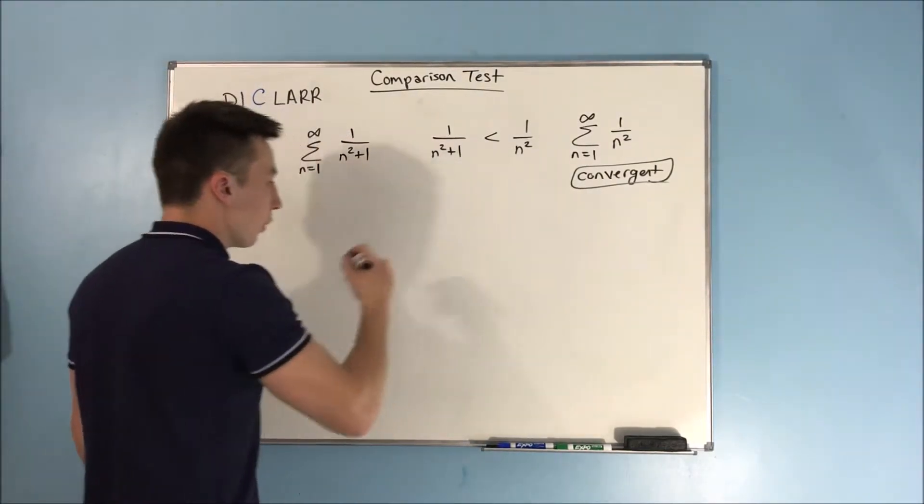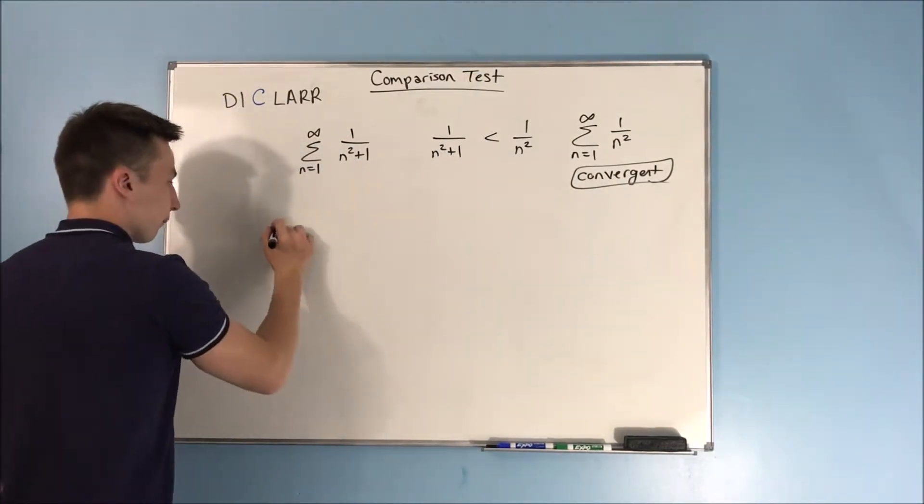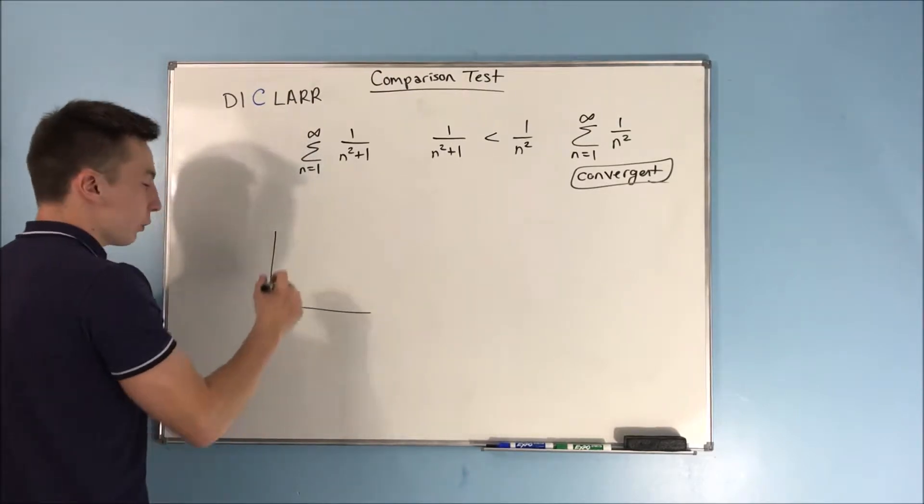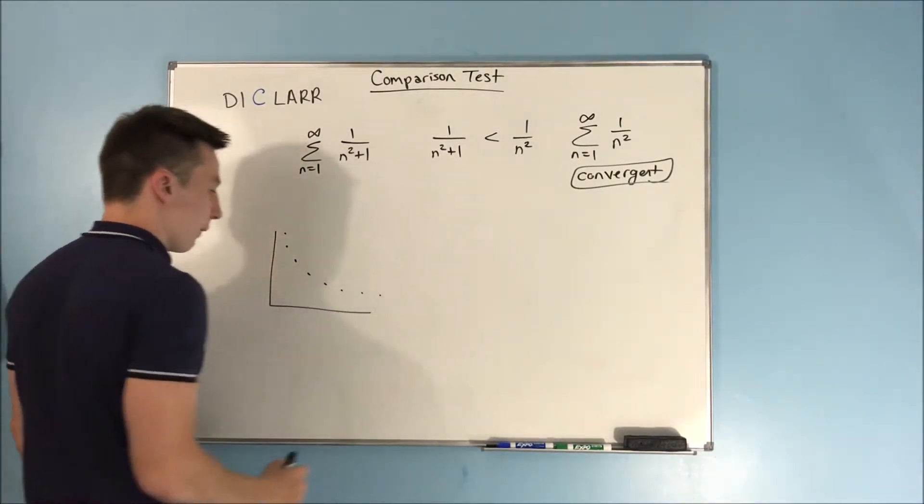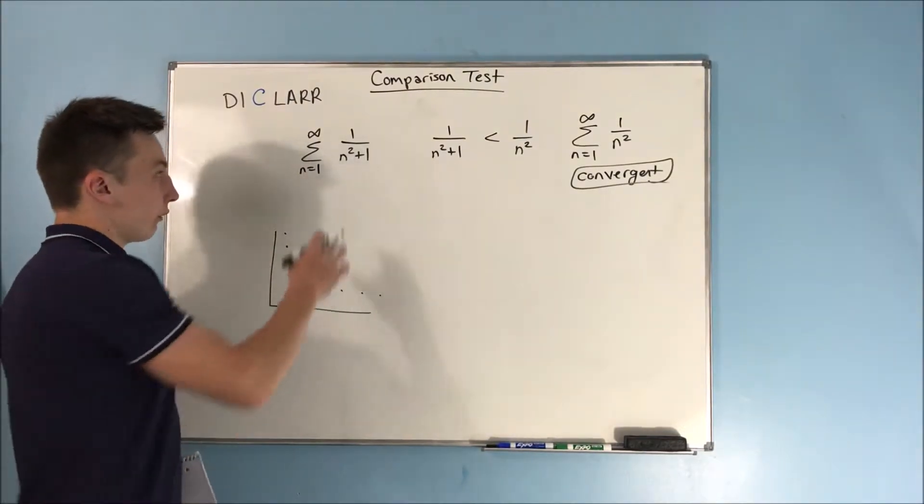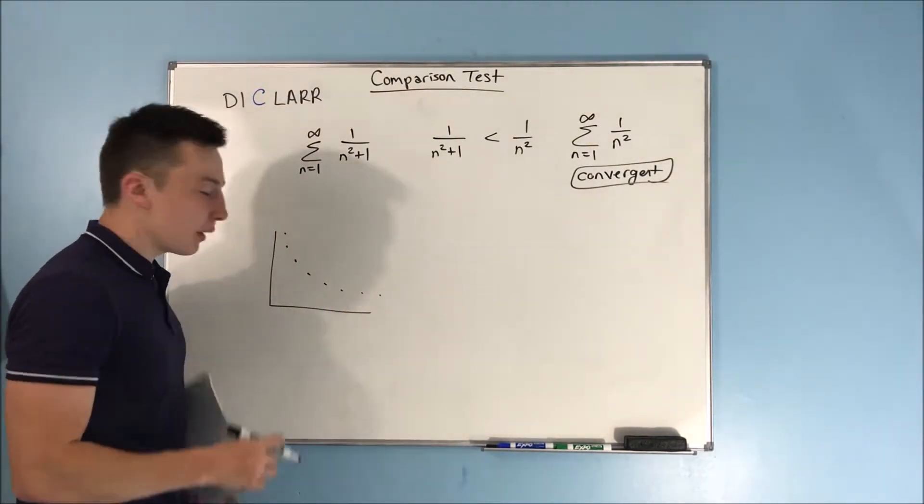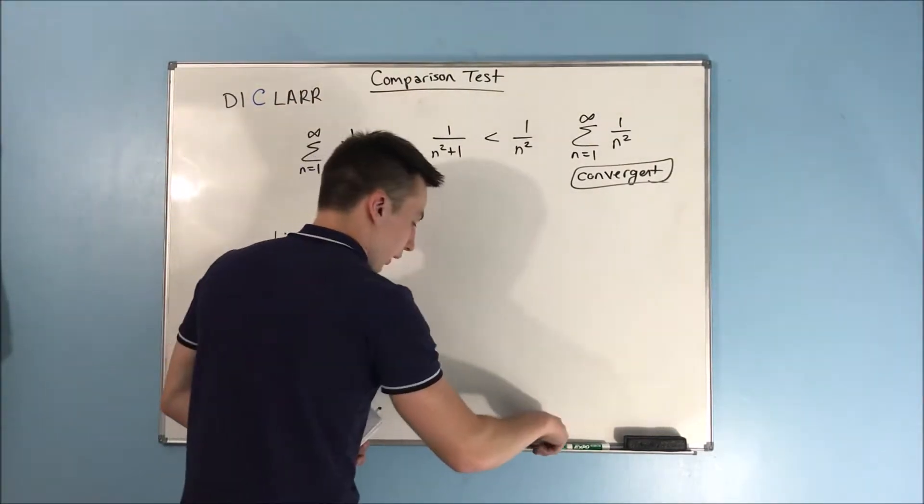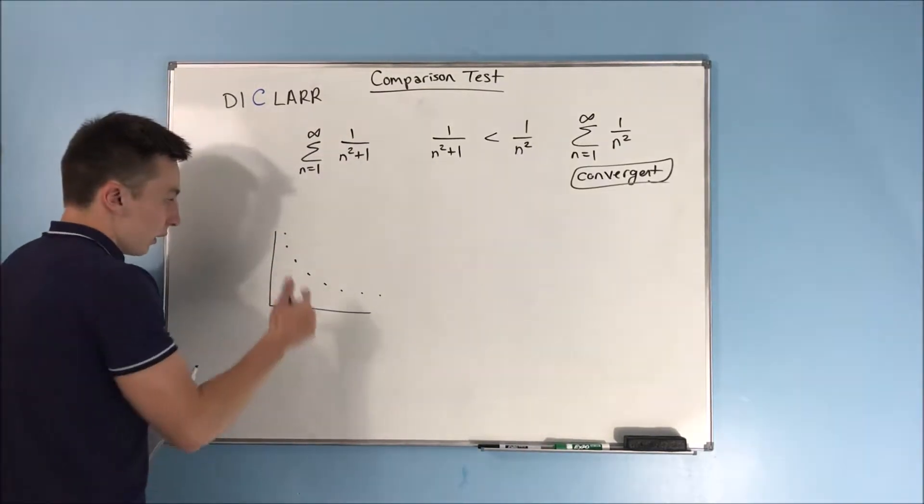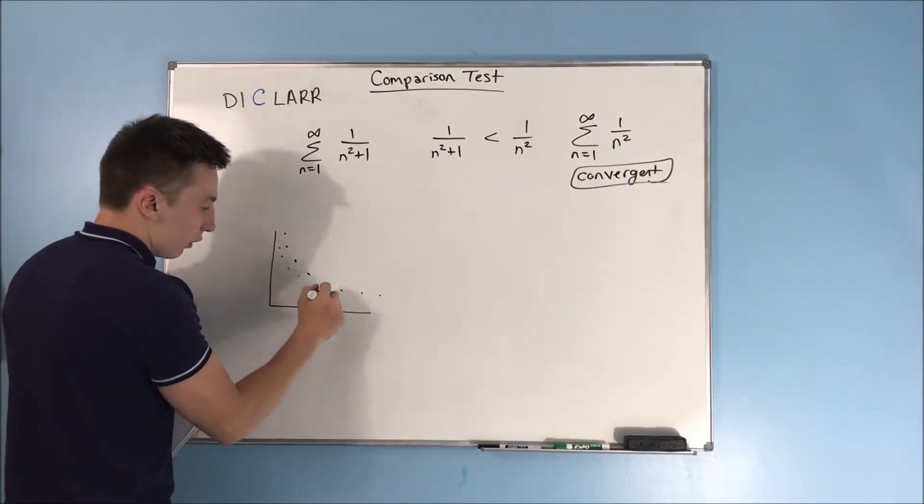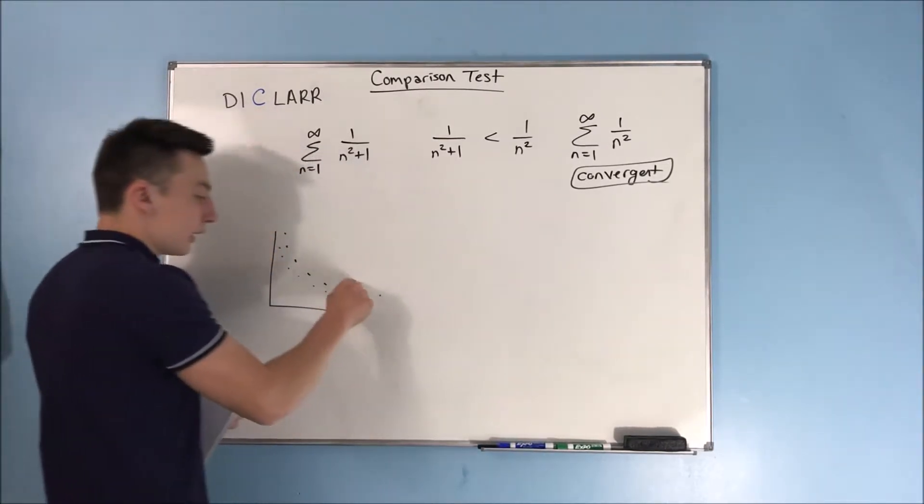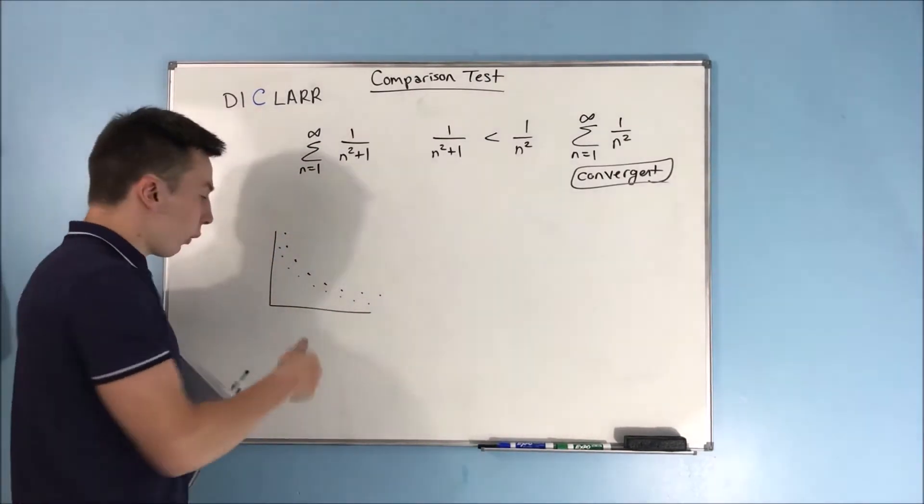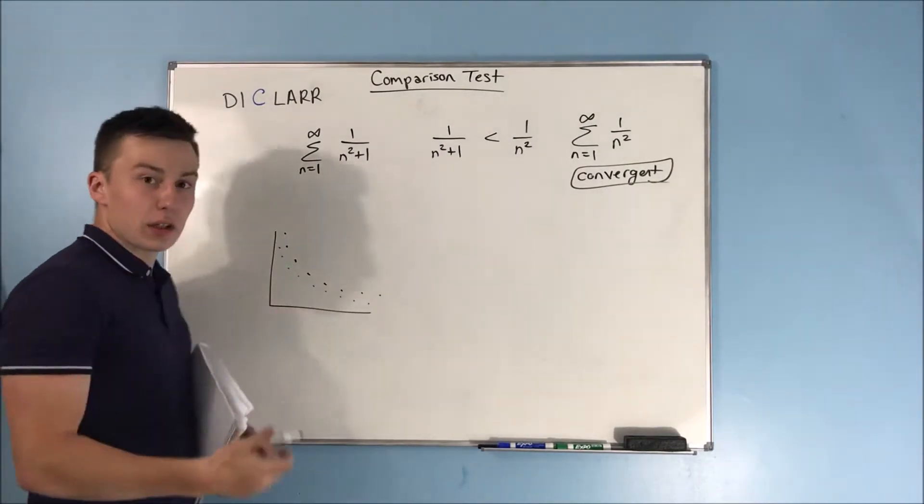So if you were to kind of draw that out here, here's 1 over n squared. Well, 1 over n squared plus 1 is always going to be less than that, so I'll draw it in blue. It's somewhere down here. So if the top one is going to converge, then of course the bottom one is going to converge as well.